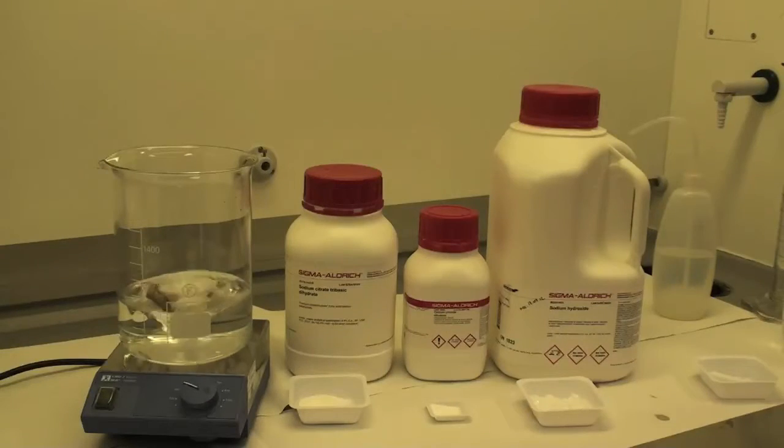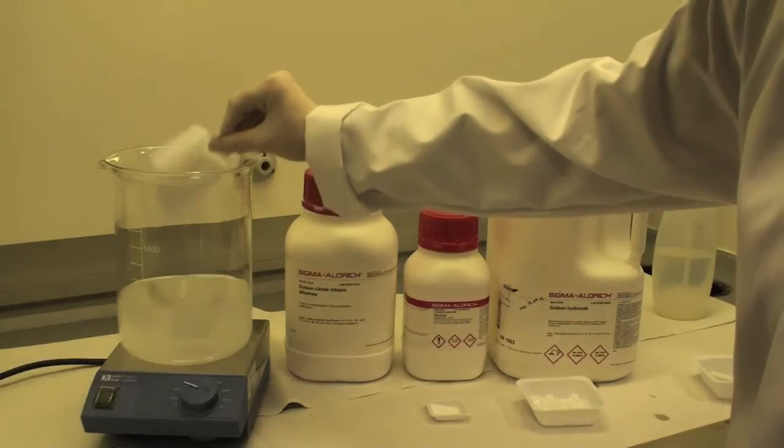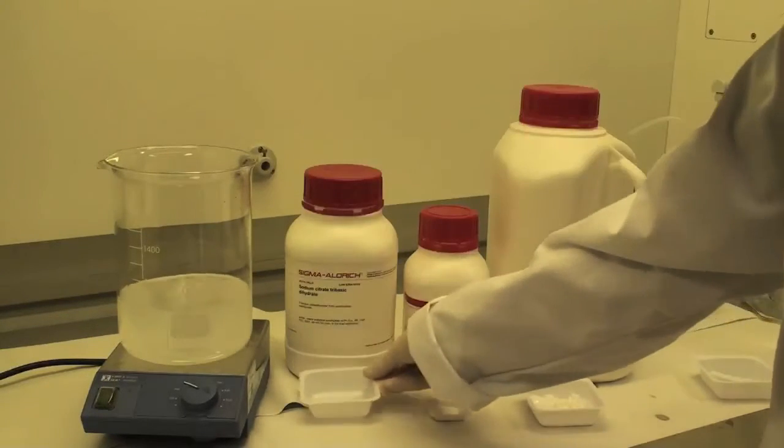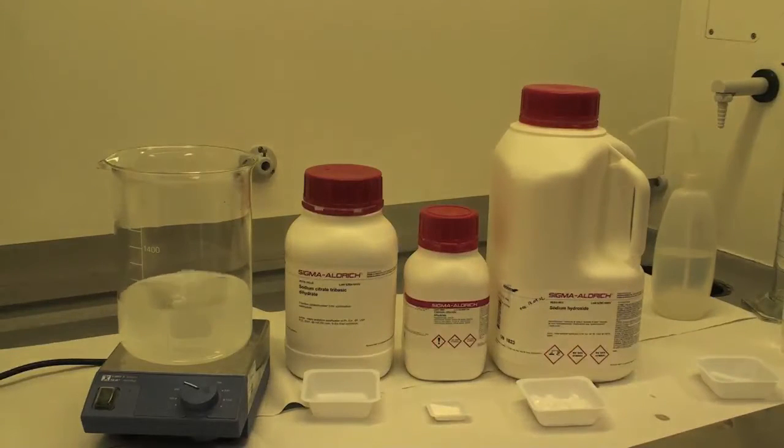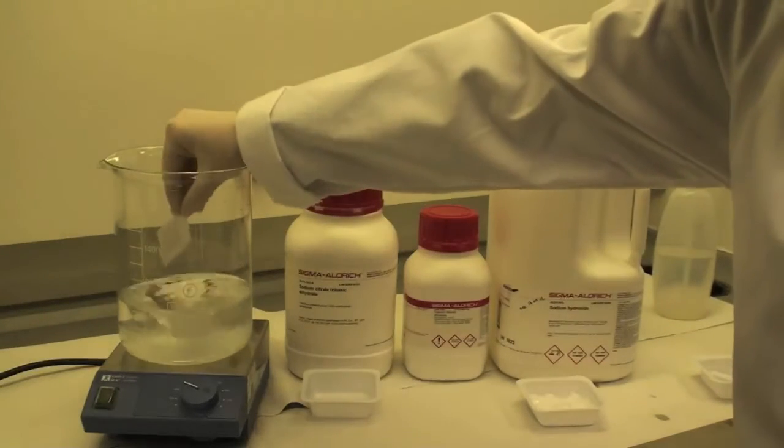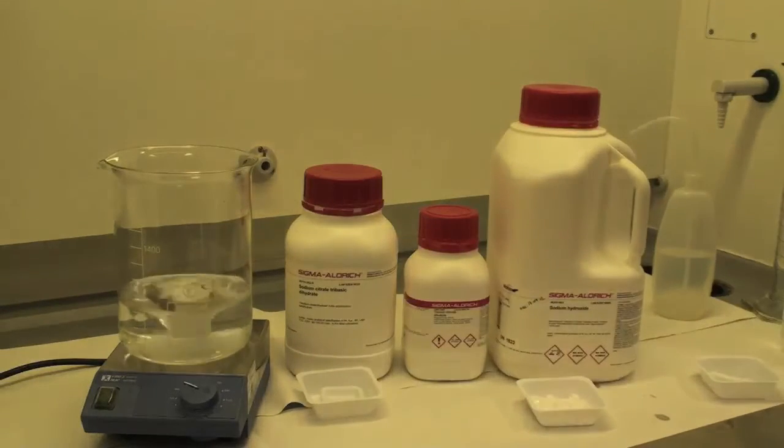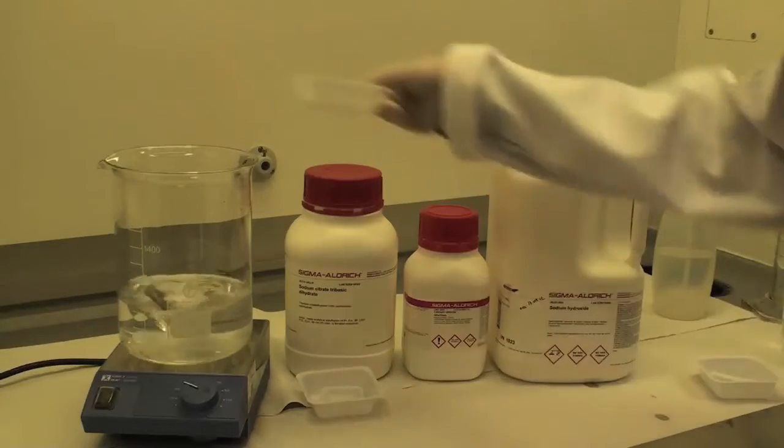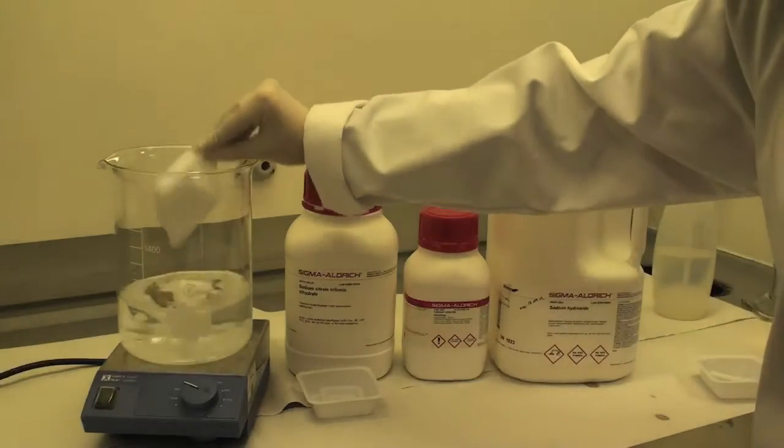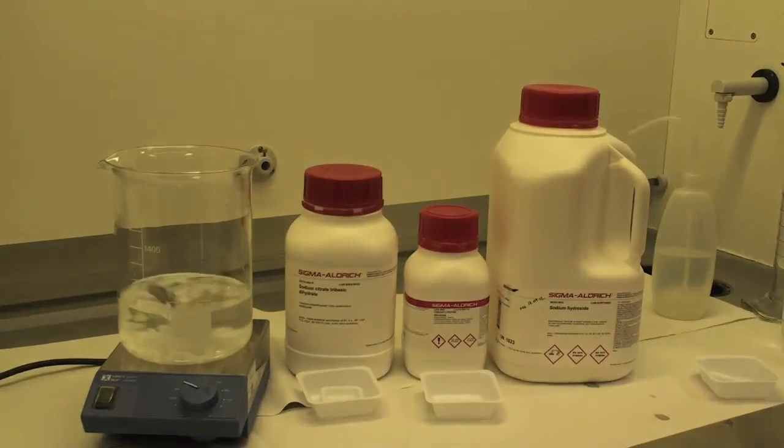Prepare PAHBAH solution B by adding 24.9 grams of trisodium citrate dihydrate to 500 mls of distilled water and stir until it dissolves. Then add 2.2 grams of calcium chloride dihydrate and dissolve this by stirring. Then add 40 grams of sodium hydroxide and also dissolve this with stirring. The solution may be milky but it will clarify when the solution is diluted to 2 liters.